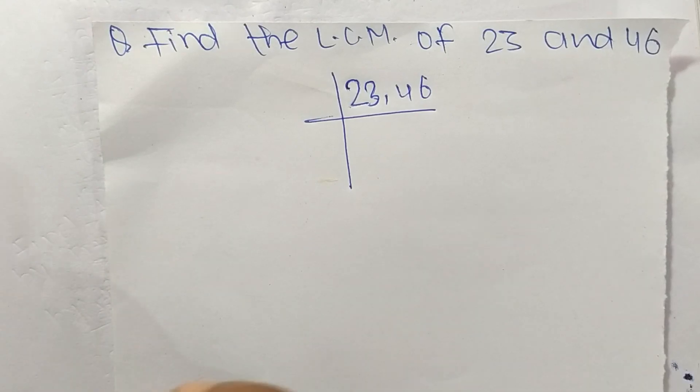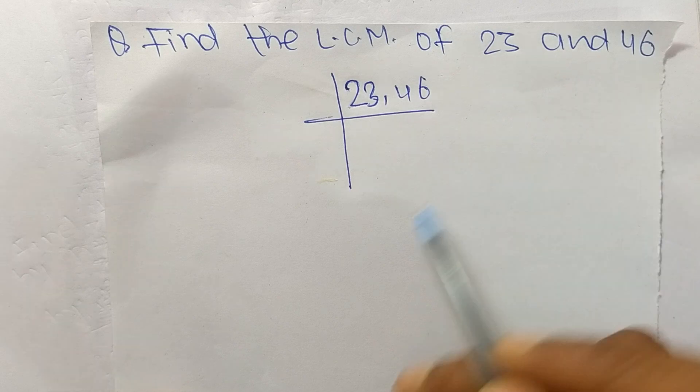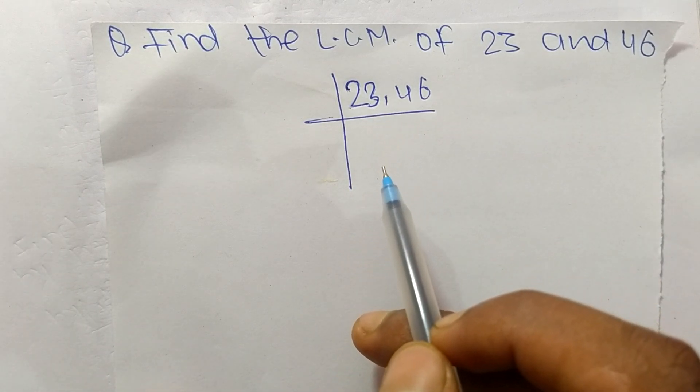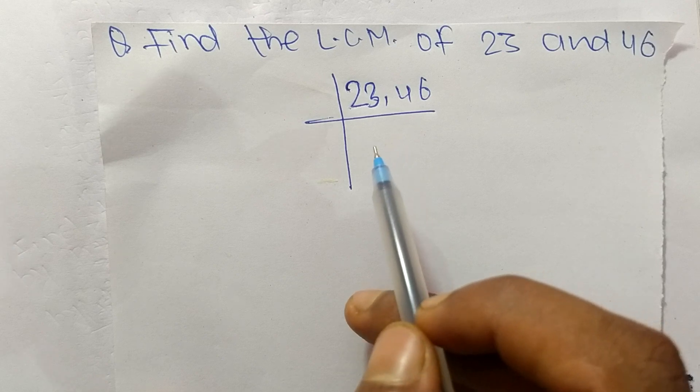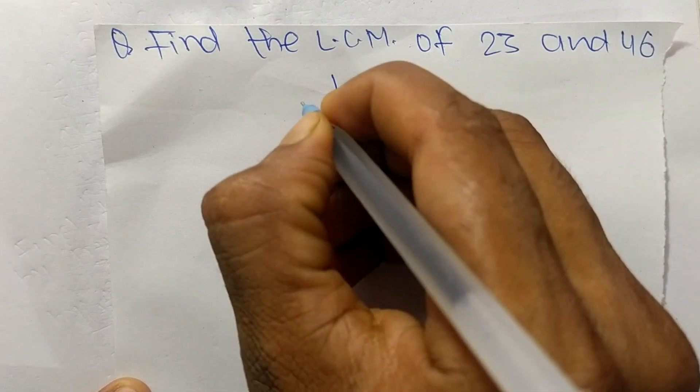Today in this video we shall learn to find the LCM of 23 and 46. To find LCM, first we have to choose the lowest number which can exactly divide 23 and 46. So the number is